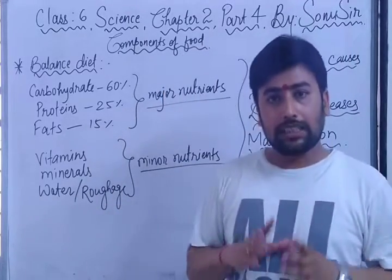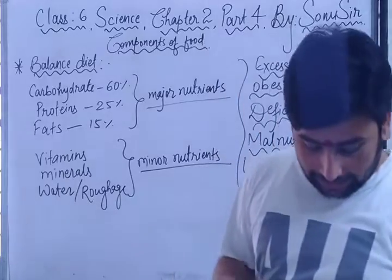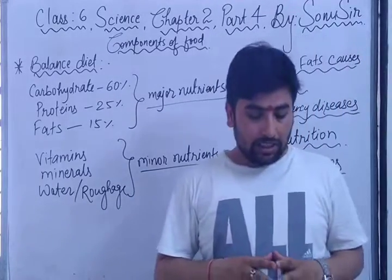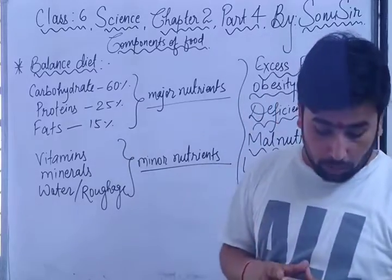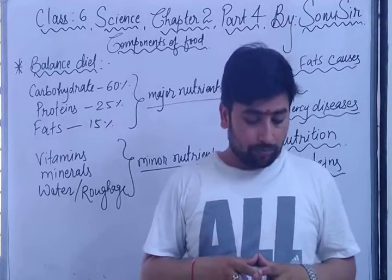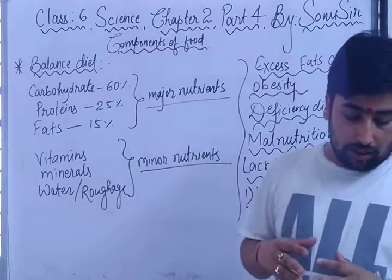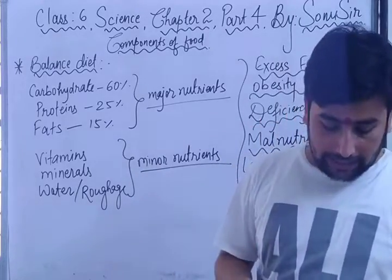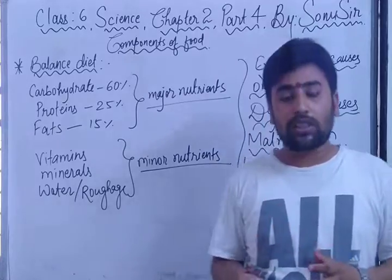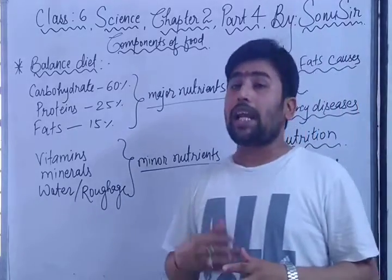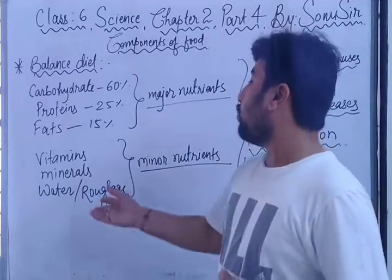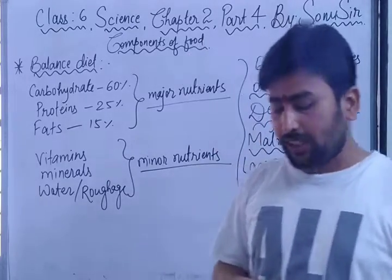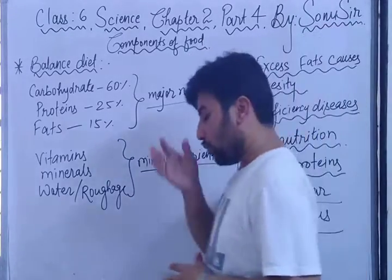Not too much, not too little — that diet is called a balanced diet. In your NCERT textbook, it is written: the diet should also contain a good amount of roughage and water. Our diet should have all the nutrients that our body needs in the right quantities, and it must also contain water and roughage.